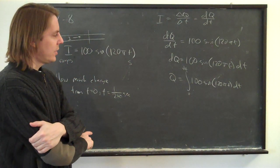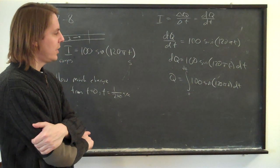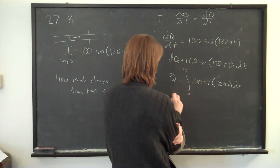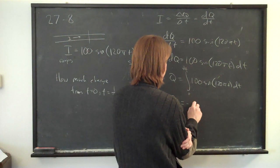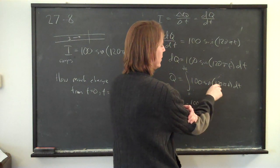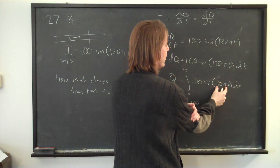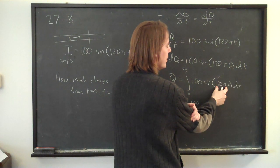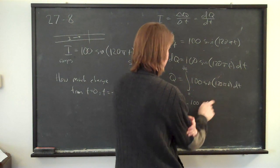That's just the integral of sine. The integral of sine is negative cosine. So Q equals minus, we bring the one hundred along, and when it goes to minus cosine, you divide by the derivative of the argument with respect to time. That derivative is one hundred and twenty pi.